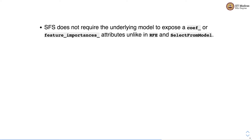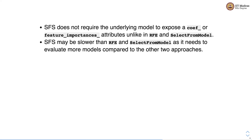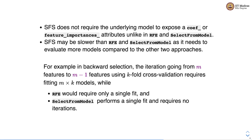Sequential Feature Selection does not require the underlying model to expose coefficient or feature importance attributes, unlike Recursive Feature Elimination and SelectFromModel. However, it may be slower because it needs to evaluate more models. For example, going from m features to m-1 features using k-fold cross-validation requires fitting m × k models in Sequential Feature Selection, while Recursive Feature Elimination requires only a single fit, and SelectFromModel also needs only a single fit with no iterations.